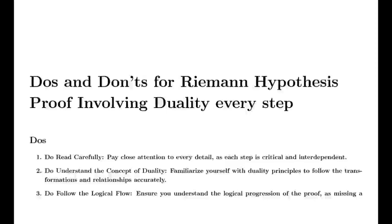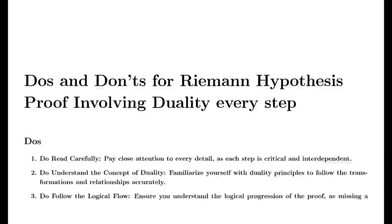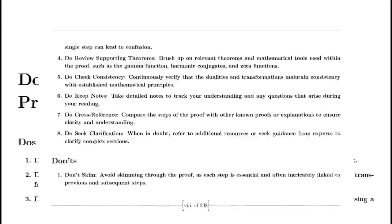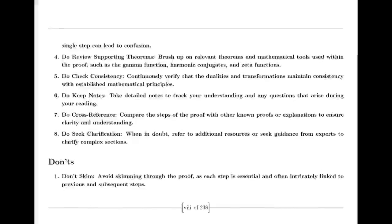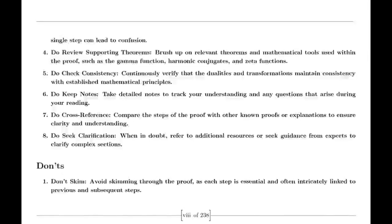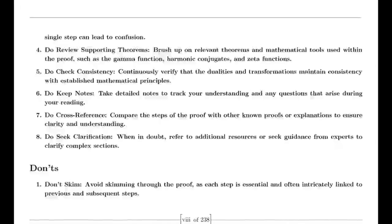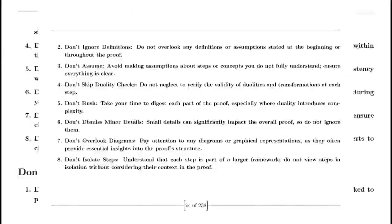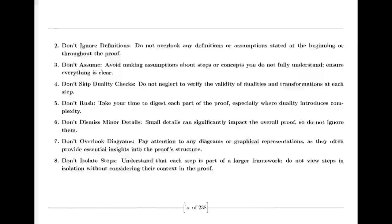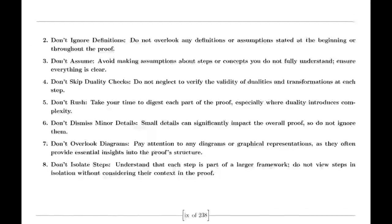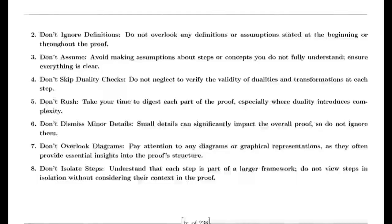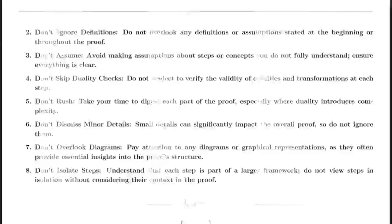Riemann's insights were not merely abstract — they opened a treasure trove of questions. He speculated about the zeros of the zeta function, points where the function takes the value zero. He famously conjectured that all non-trivial zeros lie on a critical line, a notion that would become one of the most famous unsolved problems in mathematics, known as the Riemann hypothesis.